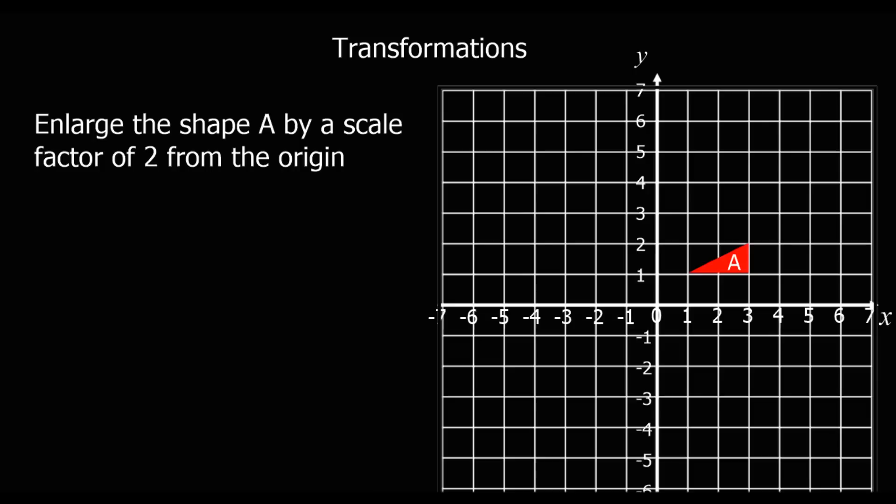This question says enlarge the shape A by a scale factor of 2 from the origin. So enlarge, when we have an enlargement, that means the shape's either going to get bigger or it's going to get smaller. Scale factor of 2 tells us it's going to be times 2, twice as big. And from the origin, that means it's extending out from the point (0, 0).